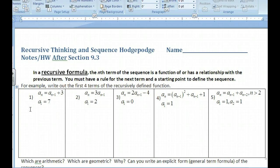With a recursive formula, you need to know the previous term to get to the next term. So you need to have a rule for the next term and a starting point to define the sequence. So some of you have been through this, so why don't you pause now and then write out what the next few terms are for each one of these.